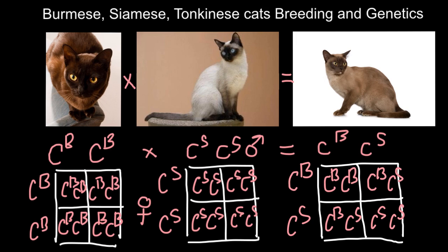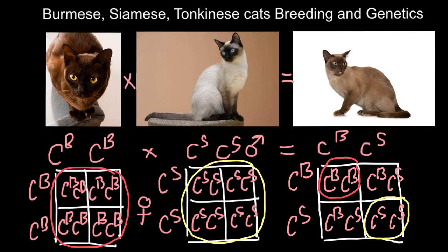...we would have one quarter that is going to be Burmese. As you see, the same genotype as here. One quarter would have the Siamese genotype. And two quarters, or 50% of the litter, we can expect kittens are going to be Tonkinese.